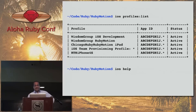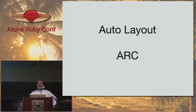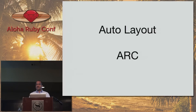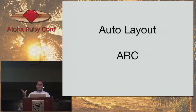Auto layout is a new feature of Xcode that allows you to specify your layouts for iOS devices in a way that behaves kind of like Twitter Bootstrap — you can specify relative positions for your labels, buttons, and other UI elements. Auto layout will work with RubyMotion as well.